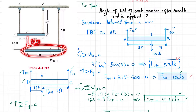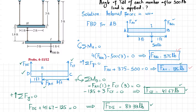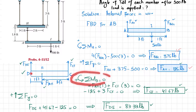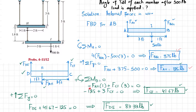For member DC, the wire forces are F_FC and F_DE, with F_AH acting downward since it was upward on the AB diagram. We apply the equilibrium condition: sum of moments about point D equals zero. F_AH × 1 foot (clockwise) plus F_CF × 3 feet (counterclockwise) equals zero.